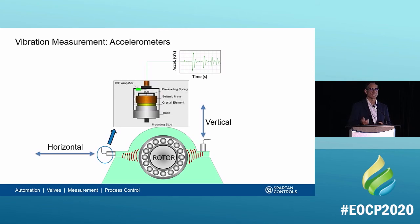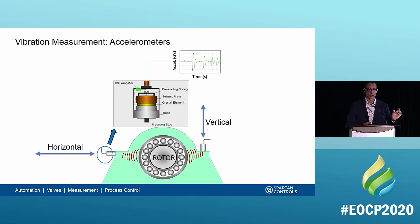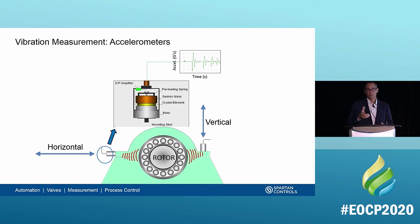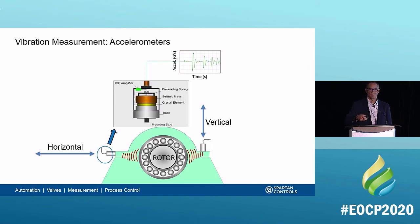To measure vibration, we use a piezoelectric crystal-based accelerometer installed directly onto the motor — for example, one mounted to measure horizontal vibration and one for vertical vibration. The piezoelectric crystal suspends a mass; as vibration increases, the crystal vibrates and produces an electrical signal. We take that electrical signal from the crystal into our signal conditioning and measuring device. The crystal allows us to convert physical vibration into an electrical signal that we can actually measure.